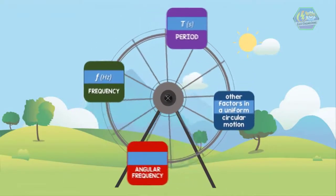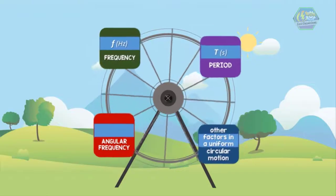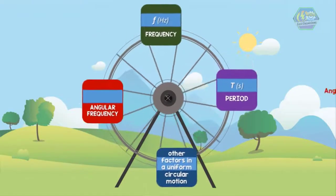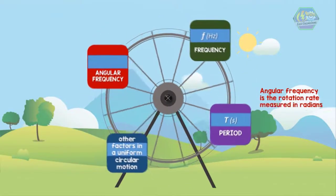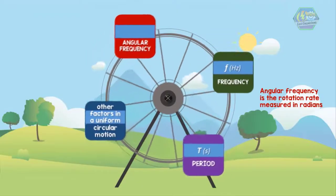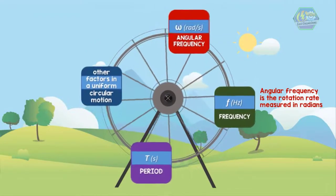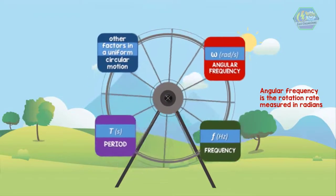Usually, we encounter the term angular frequency in uniform circular motion problems. Angular frequency is the rotation rate measured in radians. It is represented by a Greek alphabet called Omega. And the unit for angular frequency is radians per second.